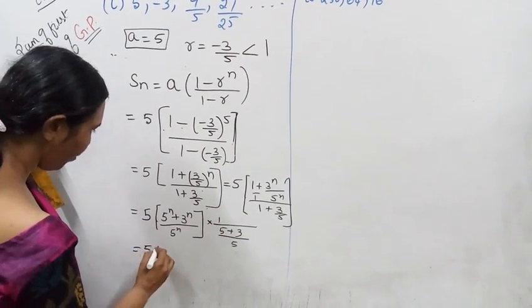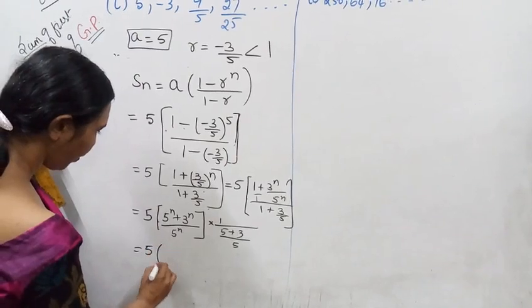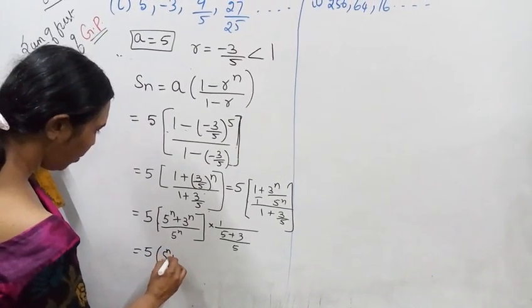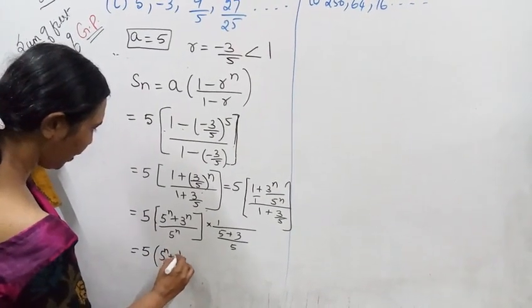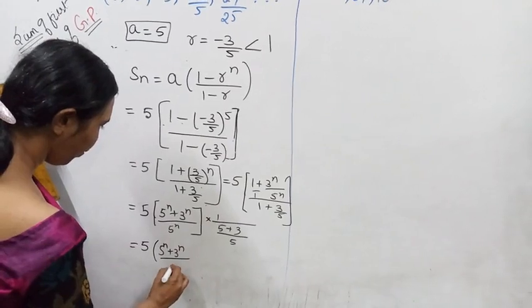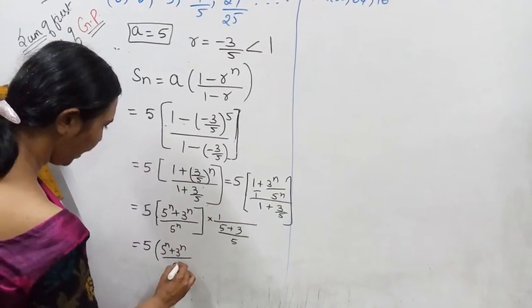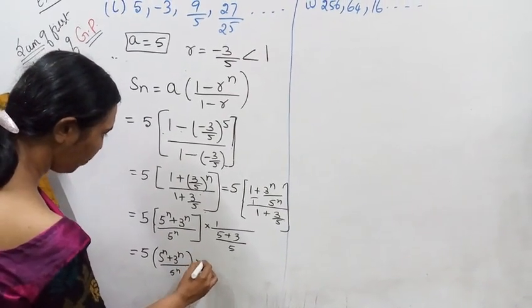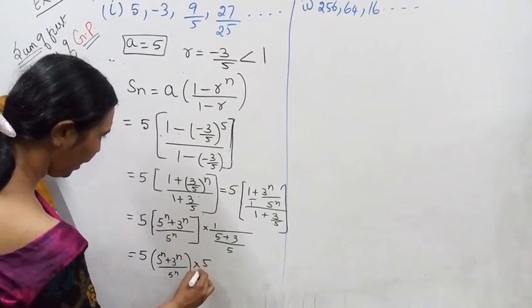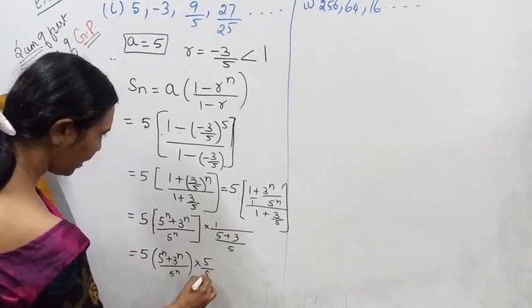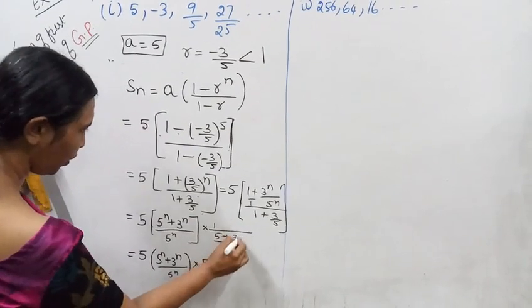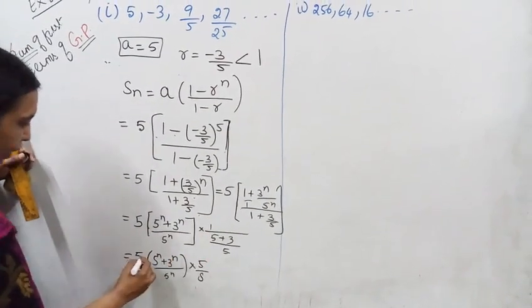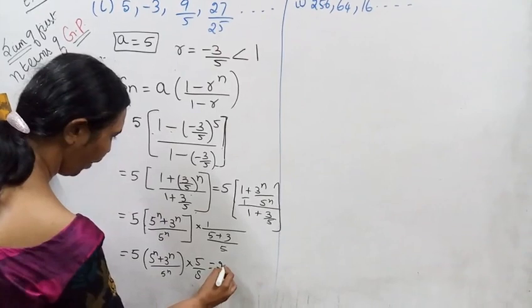5 is 5. 5. 5 power n. 3 power n. 5 power n. 5 power n. 5 power n. 25. 5 power n. 25.